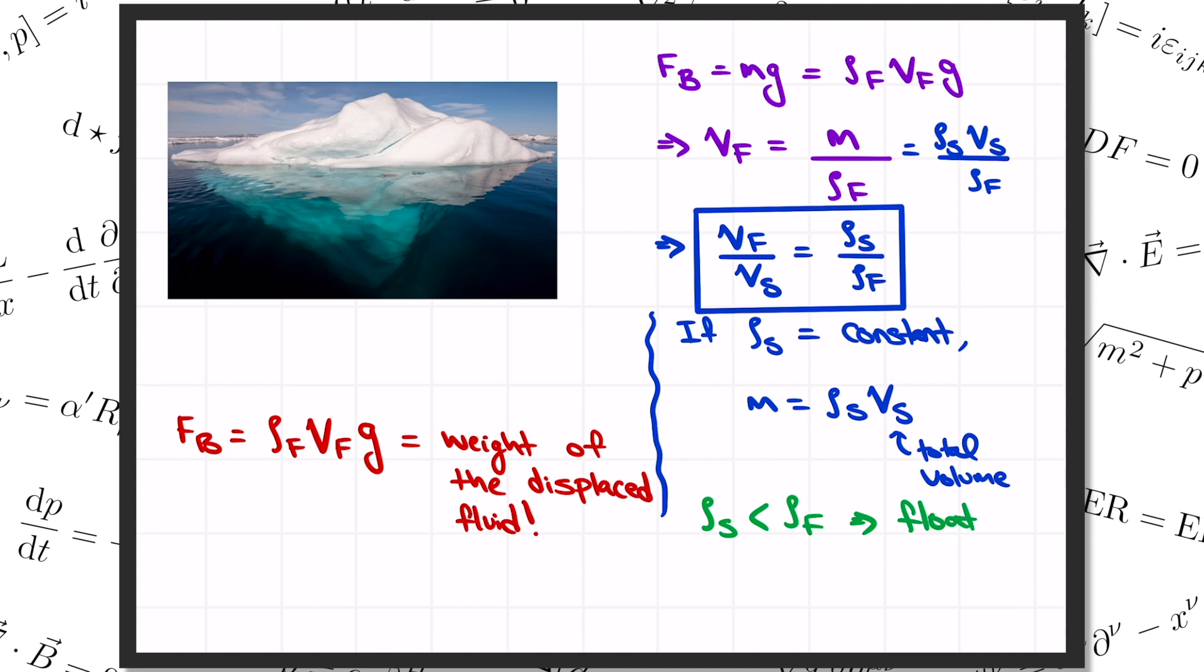Because if the density of the object is bigger than the density of the fluid, then this ratio becomes bigger than 1. But that's nonsense, because we were computing here the fraction of the total volume that sits under the surface of the liquid, which can never be more than 100% of the total volume. So if the object is more dense than the fluid, it's going to sink down to the bottom.